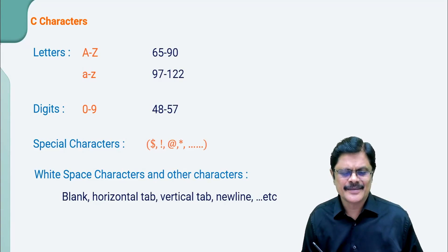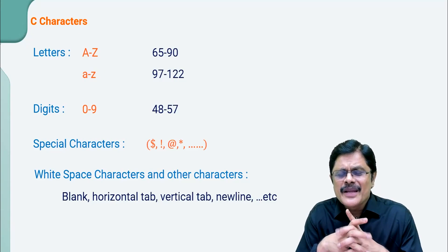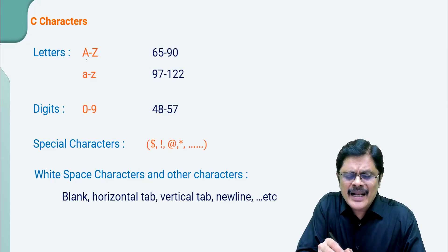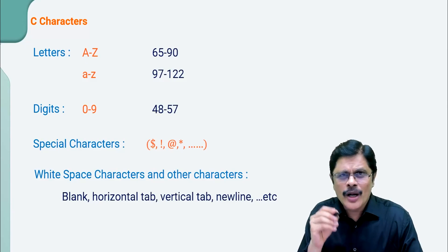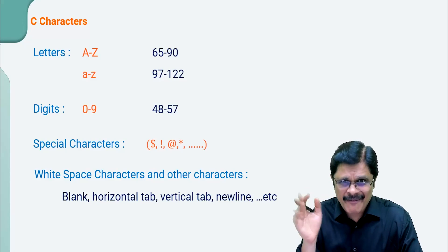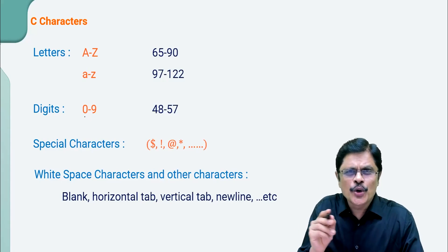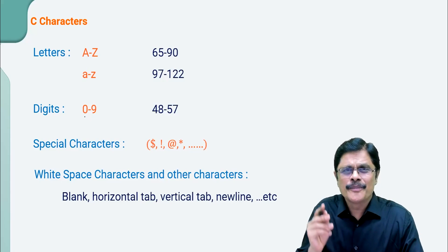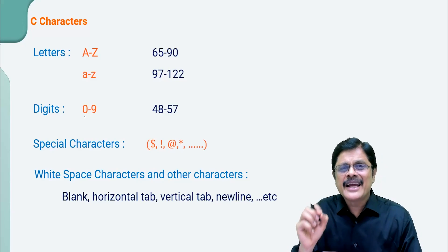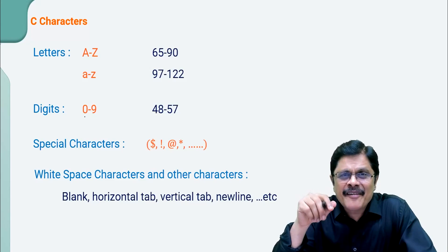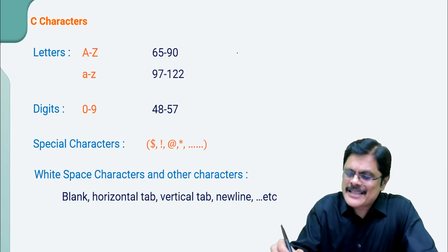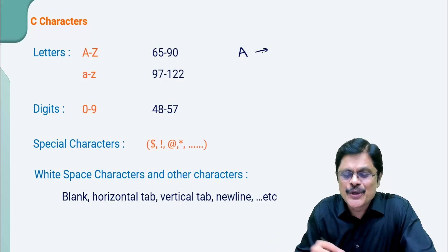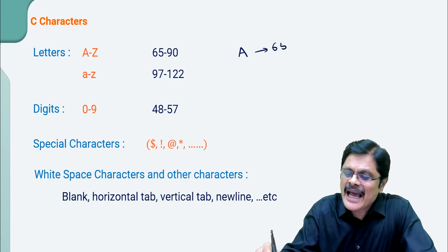So let us start with C characters. In C language, the letters capital A to Z are allowed, small a to small z are allowed, and the digits 0 to 9 are also considered as C characters. But remember, every character is identified by an ASCII value. For example, character A is uniquely identified with ASCII value 65.